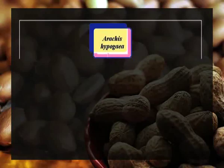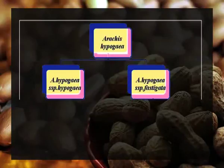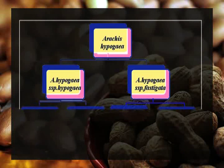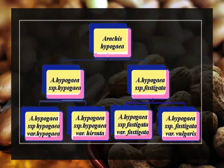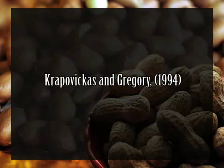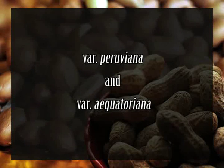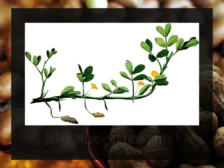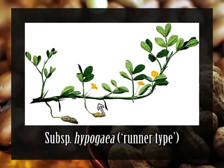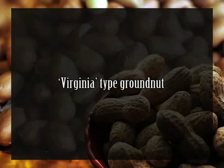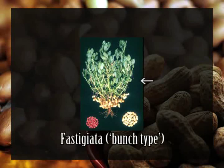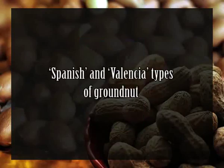Arachis hypogaea consists of two subspecies: subspecies Hypogaea and subspecies Fastigiata, each with two botanical varieties. Those of subspecies Hypogaea are variety Hypogaea and variety Hirsuta, while subspecies Fastigiata has variety Fastigiata and variety Vulgaris. In 1994, Krapovickas and Gregory proposed two new varieties of subspecies Fastigiata: variety Peruviana and variety Aequatoriana. Subspecies Hypogaea, the runner type, has a more prostrate growth habit without flowering branches on the main stem and includes the Virginia type. Subspecies Fastigiata, the bunch type, has an erect growth habit with flowering branches on the main stem, and includes the Spanish and Valencia types.